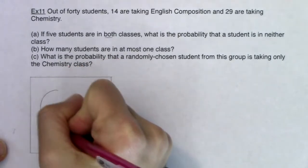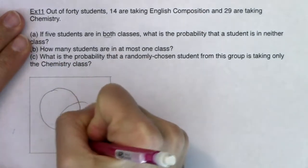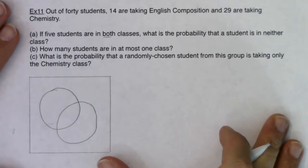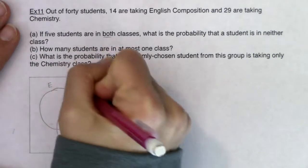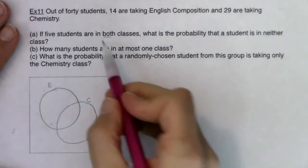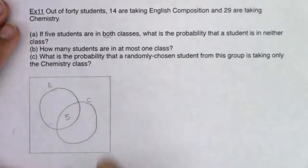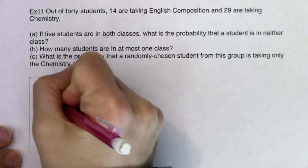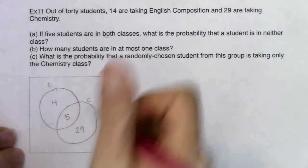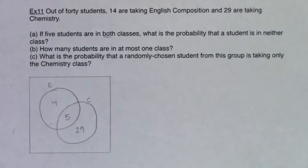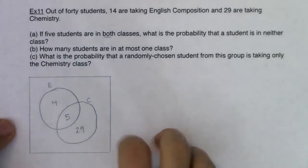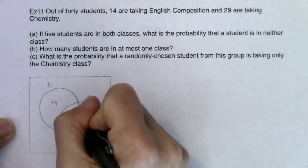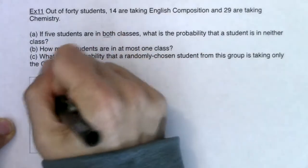So I'll draw a Venn diagram with two overlapping ovals — I'll call them E for English and C for Chemistry — overlapping because five students are taking both. The most common error I see is students putting 14 directly in the left circle and 29 directly in the right circle. If you add those three numbers — 14, 5, 29 — you'd get 48 students total, but there are only 40. That tells you something is wrong.